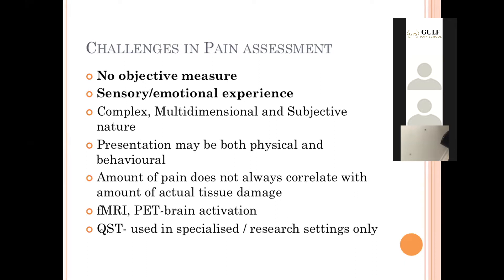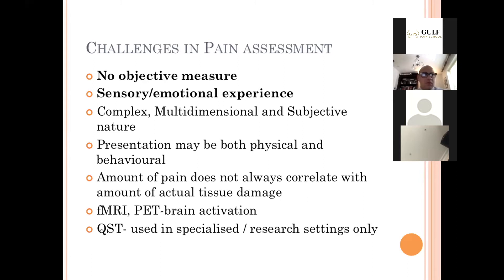The amount of pain does not always correlate to actual tissue damage — for example, in back pain, patients complain of severe pain but there's hardly any tissue damage visible on MRI scans. There are tests that try to objectify pain, such as functional MRI and PET scans showing brain activation. However, these are rarely done in practice. Specialized tests like quantitative sensory testing are used only in research settings.